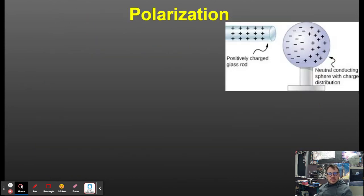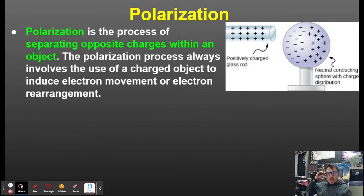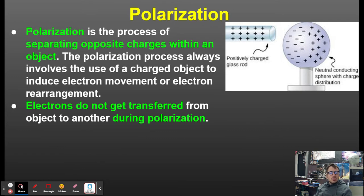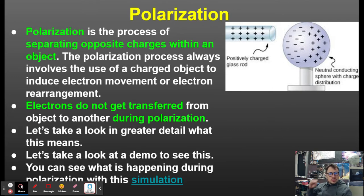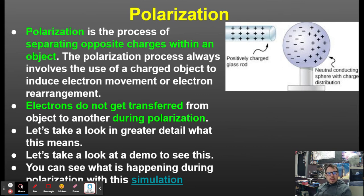Why does a balloon stick to hair? We need to learn three types of charging and two other key concepts. First is polarization — the process of separating opposite charges within an object, using a charged object to induce electron movement without transferring electrons between objects. For example, a positively charged rod brought near a conducting sphere causes electrons to migrate toward the positive side, separating the charges into a positive side and a negative side.